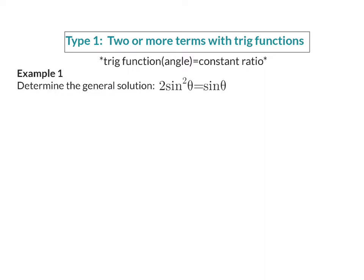So let's have a look at example one. Determine the general solution, and here, as I mentioned, you need to realize that we now have two terms, and both of them have trig functions in them, and therefore we can't start off immediately with trig function, angle, equal to a constant ratio. In this case, we are going to have to factorize.